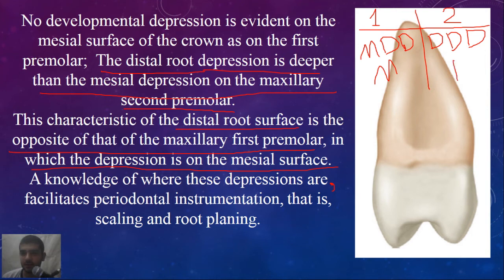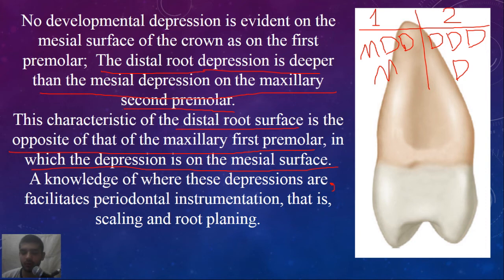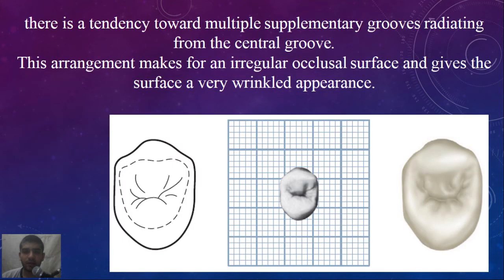This is a way to distinguish between these two teeth, and this feature is used to facilitate periodontal instrumentation by knowing whether the depression is located on the mesial side or on the distal side — this is a very important note. The other note: there is a tendency toward multiple supplementary grooves radiating from the central groove.